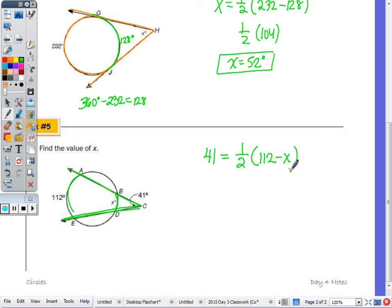To get rid of the one half, we can double both sides. Double 41, you get 82. When I double this whole side, that's equivalent to 112 minus X. Subtract the 112, we get negative 30. Divide by negative 1, and X is 30 degrees.